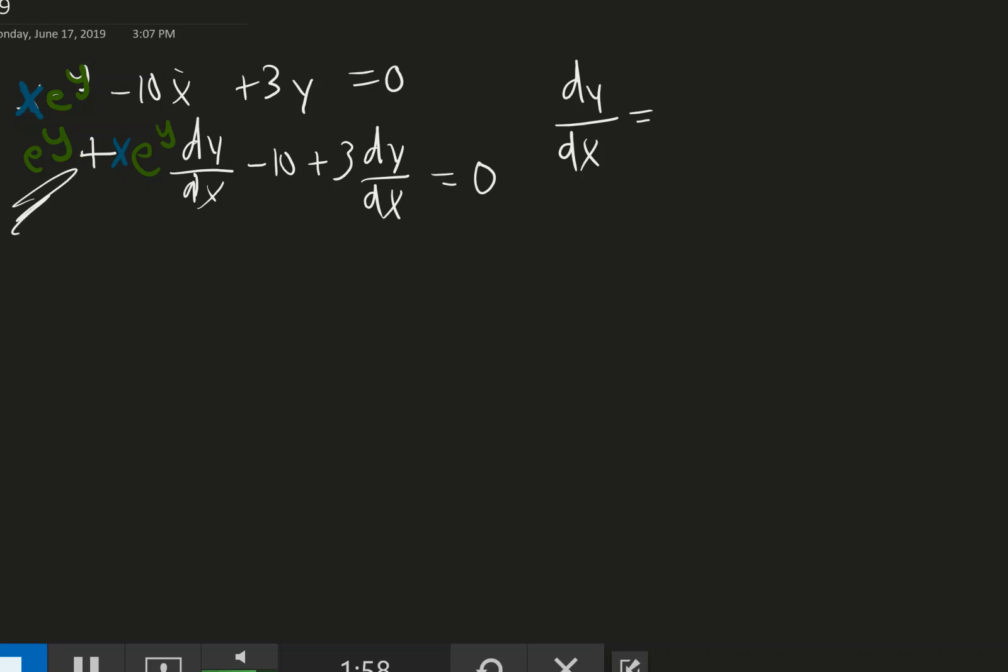So anything that doesn't have a dy dx can be added or subtracted over to the other side. So I need to subtract over an e to the y and add over a 10. And a pretty common theme, you're starting to see that now everything over here has a dy dx. So I can factor out a dy dx, like a GCF.